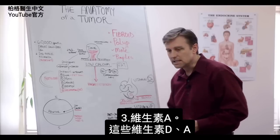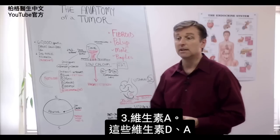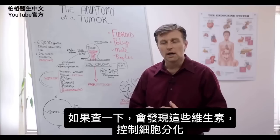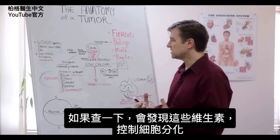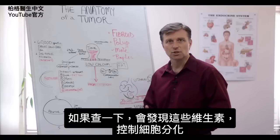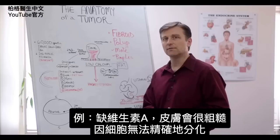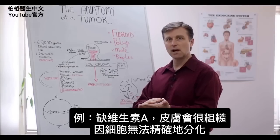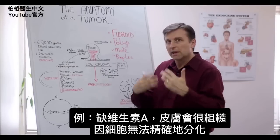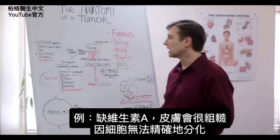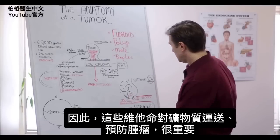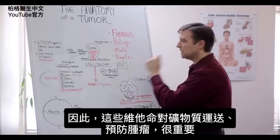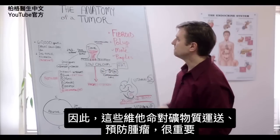These vitamins — vitamin D and vitamin A — control what's called the differentiation of what cells turn into. So if you're deficient in vitamin A, you'll have all this rough skin because the cells can't be duplicated exactly as they should. These vitamins are very, very important in the transportation of minerals and the protection against tumors.